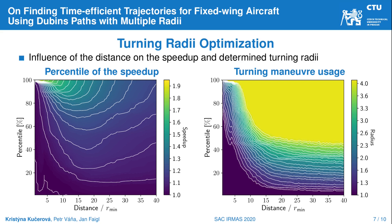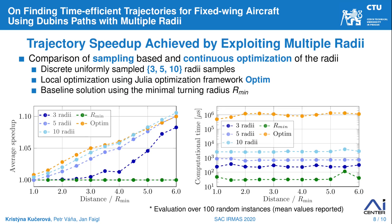The radii were calculated using local optimization of the travel time estimation. Now let's sample the radii instead and inspect the effectivity of the computation options. We compare the local optimization method, denoted as 'optim', with uniformly sampled turning radii. The results suggest that uniform samples provide similar speedup as the local optimization; however, the computation of uniform sampling is about a thousand times faster.